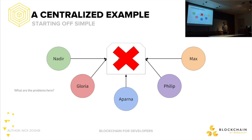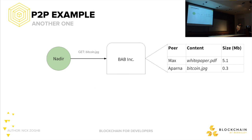What is the problem with a centralized entity? It has a central point of failure, and it has the power to manipulate the data. In this class we want to move away from centralized entities.